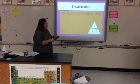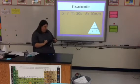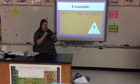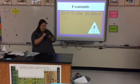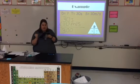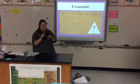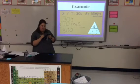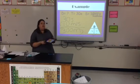Now let's look at an example where we're solving for distance. When I cover up distance on the triangle, I notice that speed and time are next to each other — and when they're side by side, that means I multiply. I have 30 seconds multiplied by 10 meters per second. When I multiply those out, I get 300. Because speed tells me my distance is in meters, my correct answer with units is 300 meters.